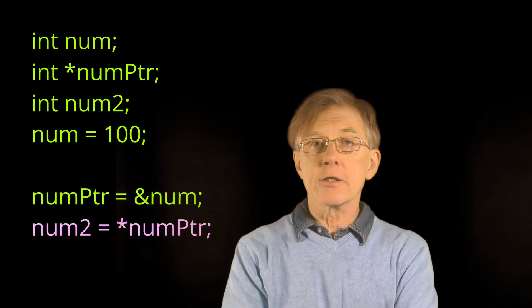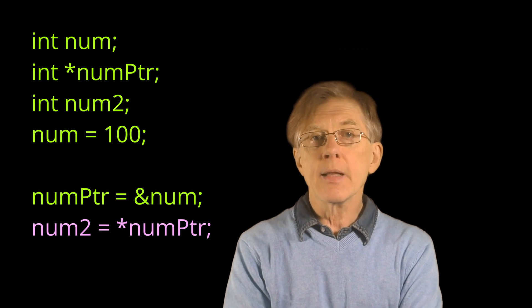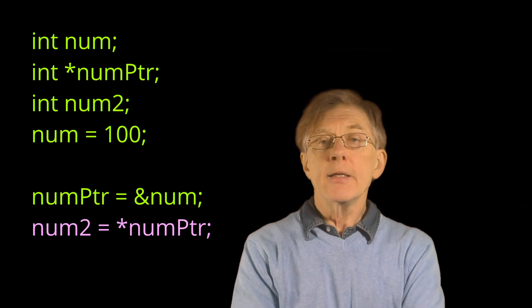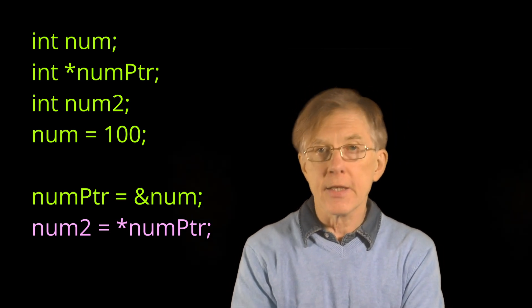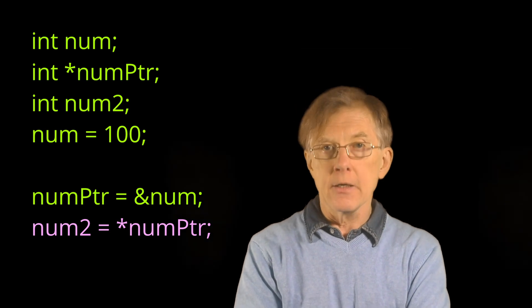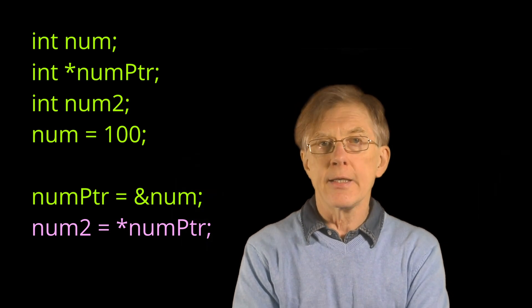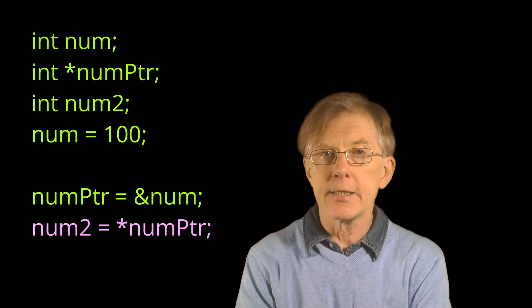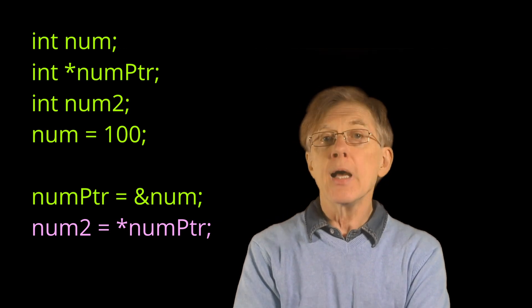I can also use an asterisk to get the values at an address. That's called dereferencing. Dereferencing just means go to this address to get or set the data. So here num2 is assigned the int value at the address stored in numptr. That is the value 100 assigned to num.